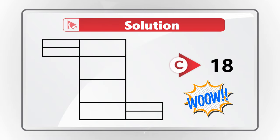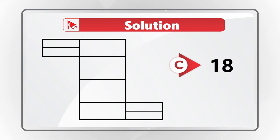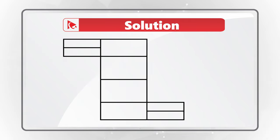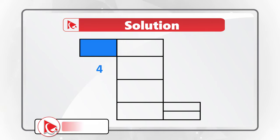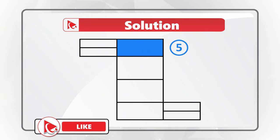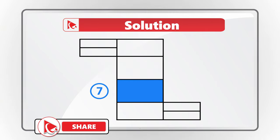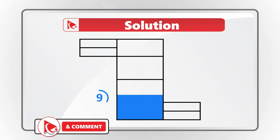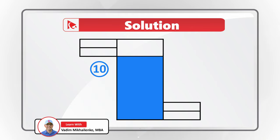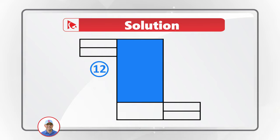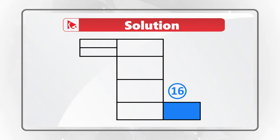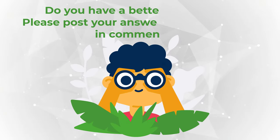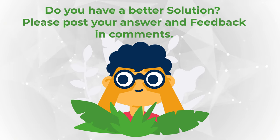I counted 18 rectangles in this shape. Let me show them all to you: 1, 2, 3, 4, 5, 6, 7, 8, 9, 10, 11, 12, 13, 14, 15, 16, 17, and 18. Do you see a different number? Please make sure to post in comments.